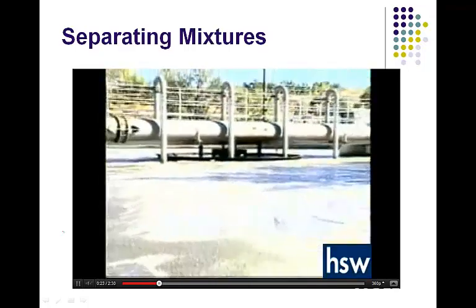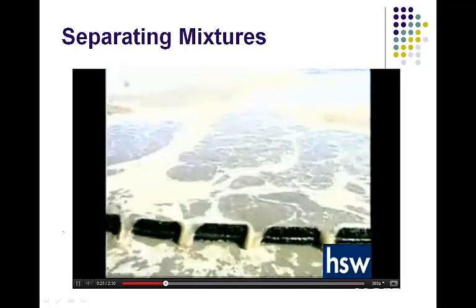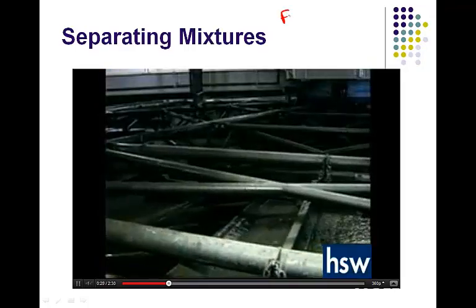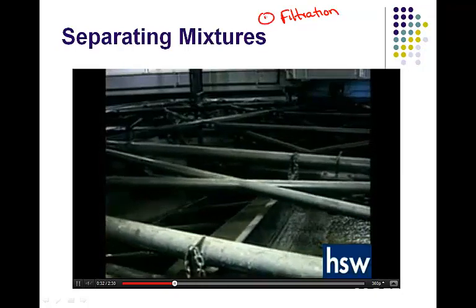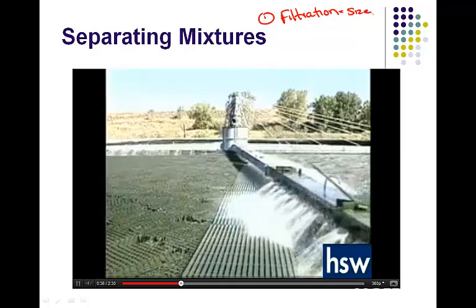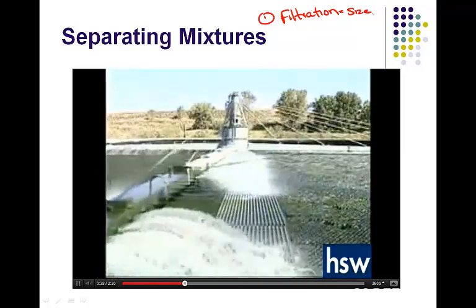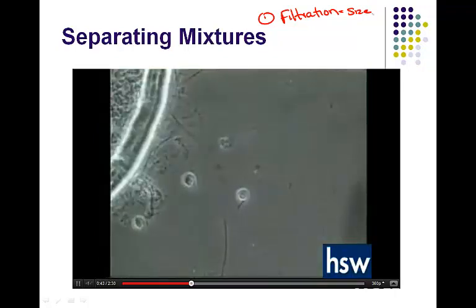For instance, polluted water needs to be filtered before it can be used again. Water treatment plants have a variety of filters and settling tanks used for removing various substances from the water. Here, polluted water trickles over a filter of rocks and pebbles containing living bacteria that eat many of the suspended particles in the polluted water.